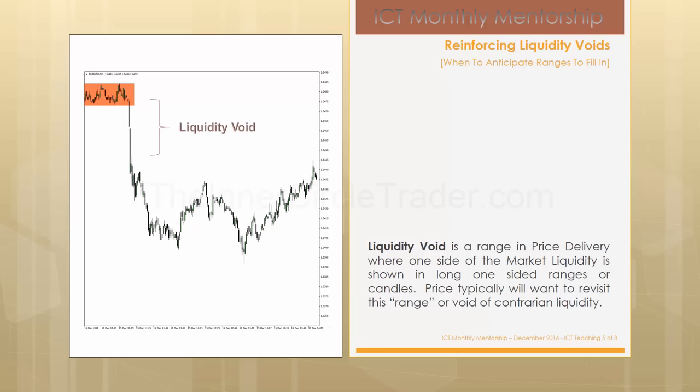The shaded area of that consolidation has price moving aggressively away. This is indicating that there's smart money in the marketplace and they believe price is wanting to go lower. Because they're smart money, their orders are going to be larger than ours, meaning their participation will have to be scaled in. They can't facilitate their entire net short position all at one price, so they have to gradually work that position in. Sometimes they may push it higher and run back above that consolidation to sell into buy stops.